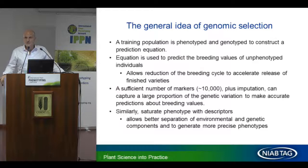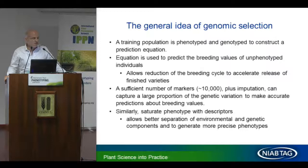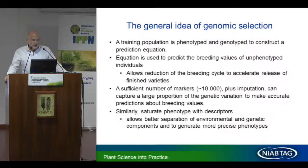Let me give a brief introduction to genomic selection. A training population is phenotyped and genotyped to construct a prediction algorithm or equation. This equation is used to predict the breeding values of unphenotyped individuals. Because you don't need to phenotype them, this allows for reduction of the breeding cycle to accelerate the release of finished varieties. A sufficient number of markers — in wheat we reckon about 10,000 markers — plus the use of imputation, can capture a large proportion of genetic variation to make accurate predictions.